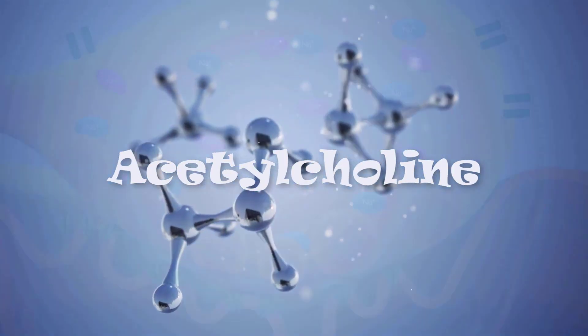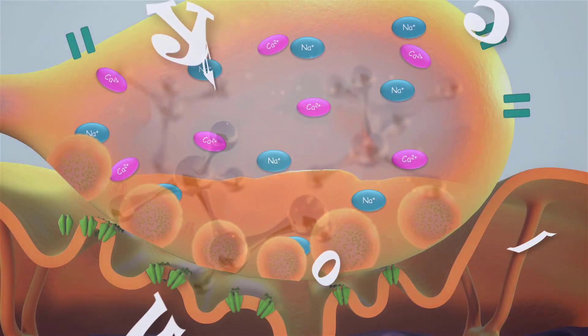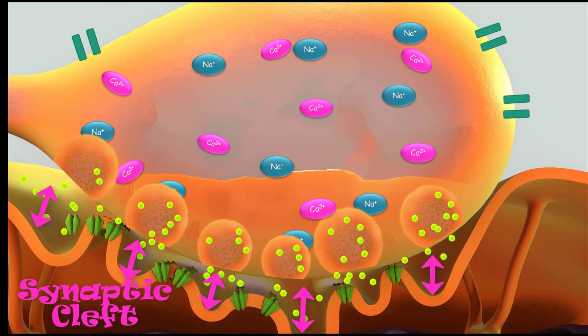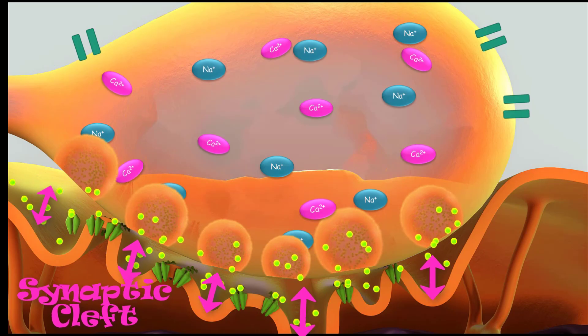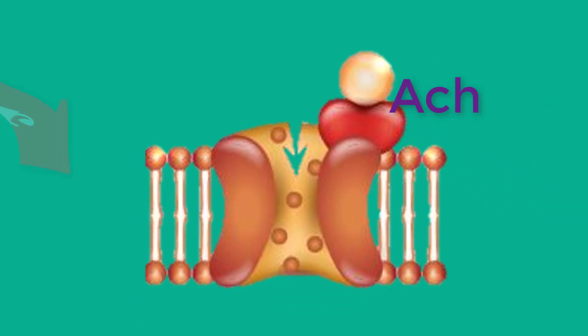Acetylcholine passively diffuses across the synaptic cleft of the neuromuscular junction. These molecules then bind to nicotinic acetylcholine receptors located on the muscle fiber.